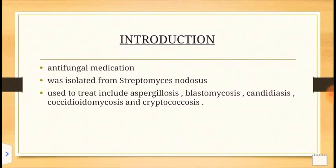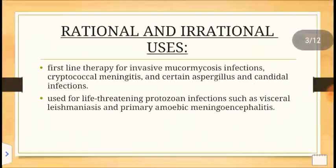Amphotericin B was isolated from Streptomyces and it is commonly used for candidal infections, cryptococcal infections, and blastomycosis. These are some fungal infections which this drug is used to treat.